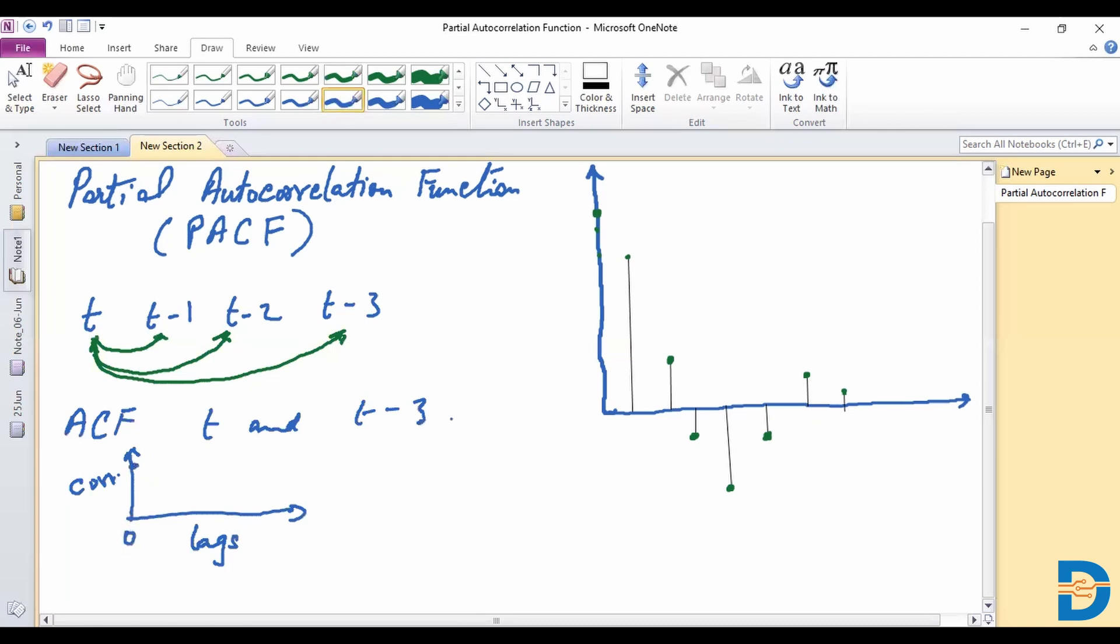So 0 would give a perfect correlation of 1 if we were to plot it. With itself, 0 would give a perfect correlation. That is the observation at time t correlated with itself.